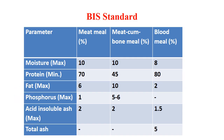Here we will see the BIS standards for different products: meat meal, meat-cum-bone meal, and blood meal. Moisture content is 10%, 10%, and 8% respectively. Protein content is 70% for meat meal, 45% for meat-cum-bone meal, and 80% for blood meal. Fat content is 6%, 10%, and 2%. Phosphorus is 1% for meat meal and 5 to 6% in meat-cum-bone meal due to the high bone content, while blood meal has almost no fat. Acid insoluble ash is 2%, 2%, and 1.5%, and total ash is 5% for blood meal.